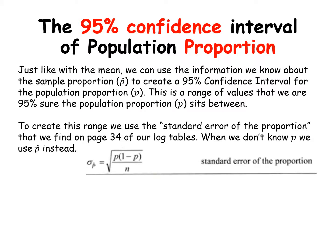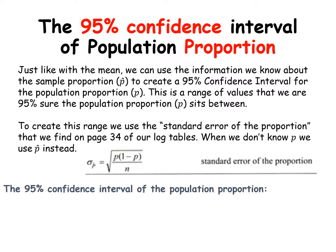However, because we don't know p, the population proportion, we're going to use p-hat instead. For the 95% confidence interval, we start with p-hat — that's the proportion from the sample — but we know it's never going to be as accurate as the actual population proportion, so it's going to be plus or minus some value.